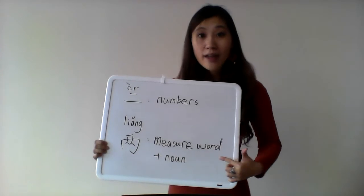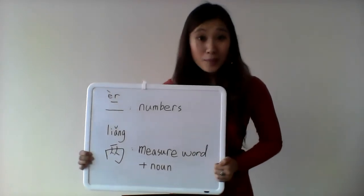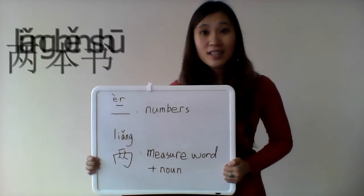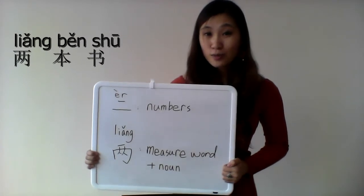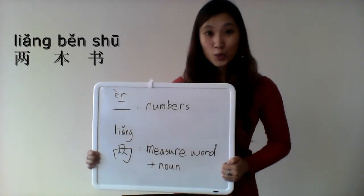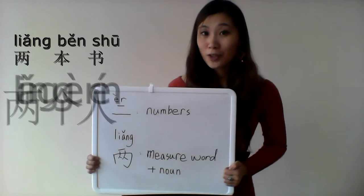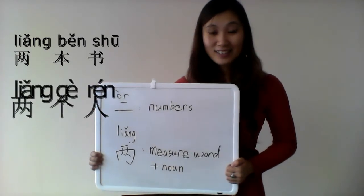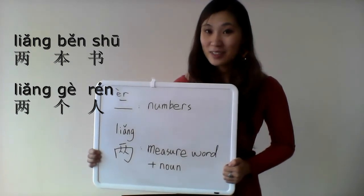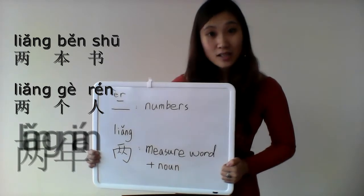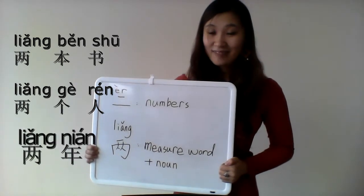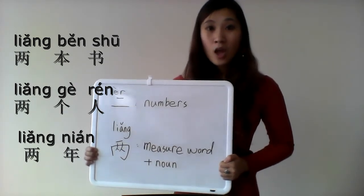And don't forget, use the measure word after that. For example, two books, liǎng běn shū, liǎng běn shū. Two people, liǎng gè rén, liǎng gè rén. Two years, liǎng nián, liǎng nián. Okay.